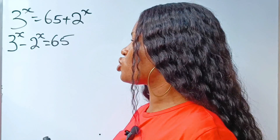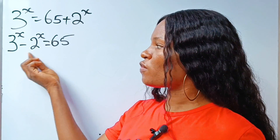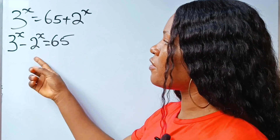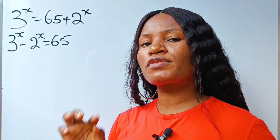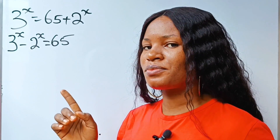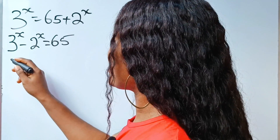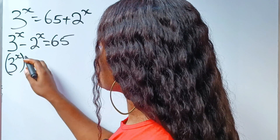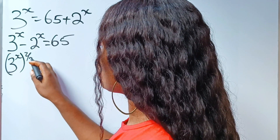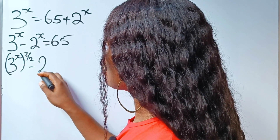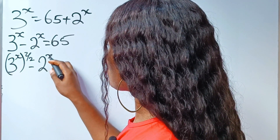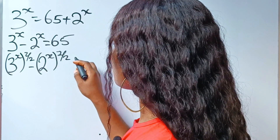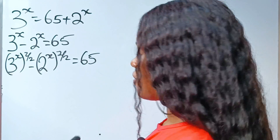Now, I want to introduce difference of two squares here. And the only way to do that is if I raise each side to the power of 2 over 2. So if we do that, we have 3 to the power of x raised to the power of 2 over 2, minus 2 to the power of x raised to the power of 2 over 2, is equal to 65.